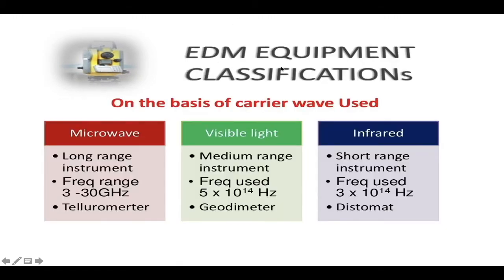EDM equipment is classified on the basis of carrier wave used. First is microwave, which is used for long range instruments such as tellurometer. Next is visible light, which is used for medium range instruments, usually known as geodimeter. Next is infrared for shorter range instruments, known as distomat.